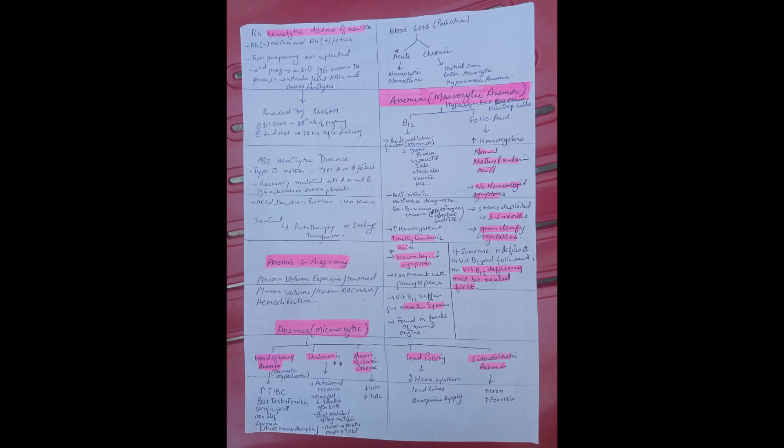Now let's see about blood loss. If there is acute blood loss, which is repeatedly asked in the MCQs, the type of anemia seen in acute blood loss is normocytic normochromic anemia.